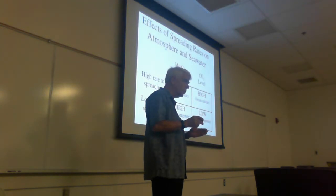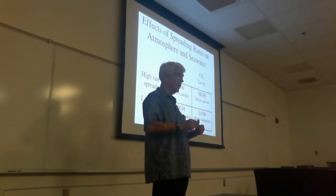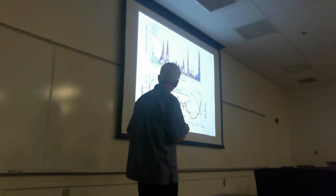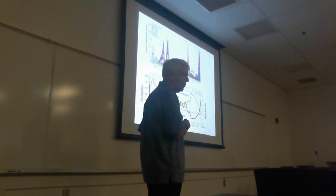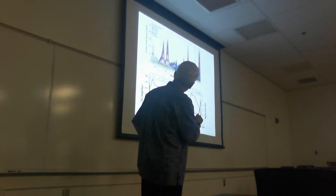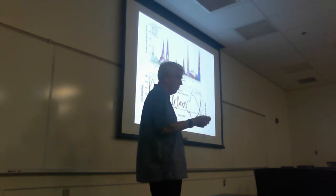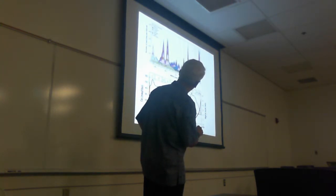When seafloor spreading is fast, new basalt forms and absorbs magnesium from seawater, so you get low magnesium in the ocean - a calcite ocean. When spreading slows down, as it is now, magnesium becomes abundant in the ocean. This is very good for corals - the ocean has never been better for corals in terms of magnesium, making it an aragonite ocean. The Pleistocene is really good for corals - better than ever - because there's low CO2 until now, high pH, and abundant magnesium.